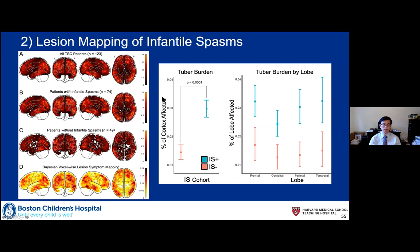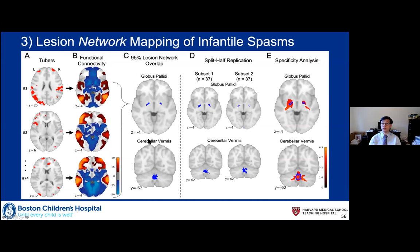Tuber burden is highly correlated with infantile spasms — not surprising, previously reported. But there have been many reports with smaller cohorts saying it's this lobe or that lobe, which didn't really pan out. However, if you do lesion network mapping of infantile spasms — taking all the tuber locations, generating functional connectivity maps, thresholding to strong positive and negative correlations, and overlapping — you really only get two regions: the bilateral globus pallidus and the cerebellar vermis having negative correlation with the cortical tuber locations. If you split your data in half, you still get the exact same regions. A statistical two-sample t-test at the voxelized level between spasms-yes and spasms-no gives the same regions — so it's not just sensitive but actually specific for infantile spasms.